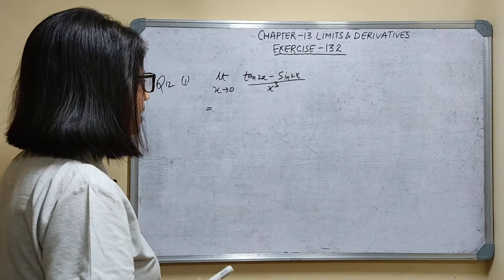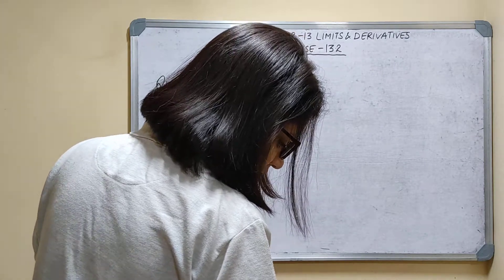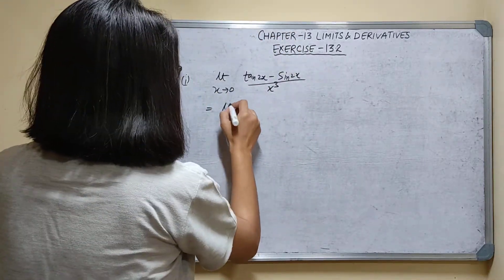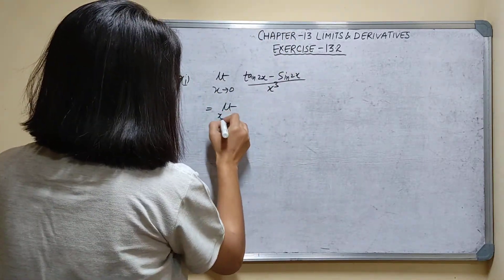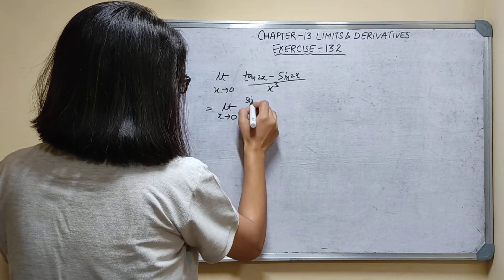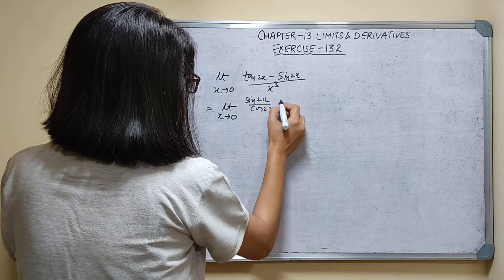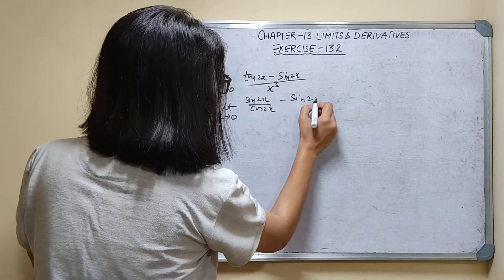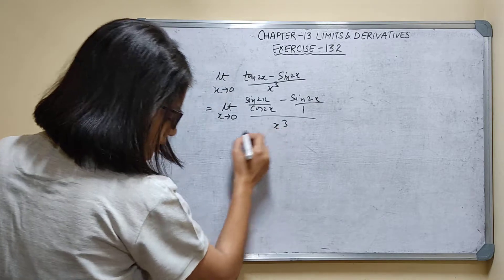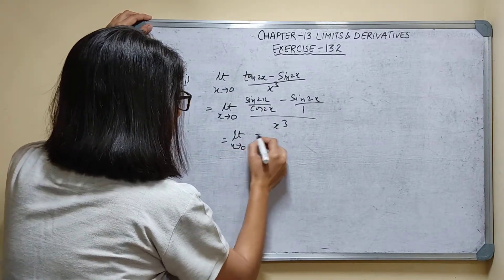Question number 12, first part: limit x tends to 0 of (tan x minus sin x) upon x cube. I will write limit x tends to 0, and rewrite tan x as sin x upon cos x, minus sin x, all upon x cube.